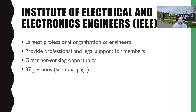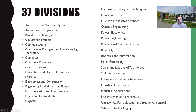There are lots of technical divisions within the IEEE — I would call these the technical aspects you could focus on as an electrical or electronics engineer. There are 37 of these divisions. I'm not going to read them all out, but I want to pause here, take a look at this list, and think about things that are interesting, confusing, or surprising.